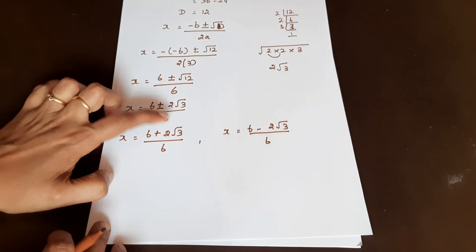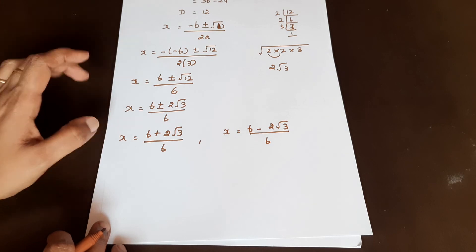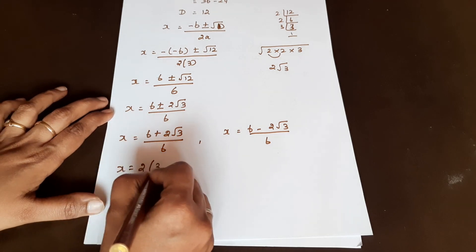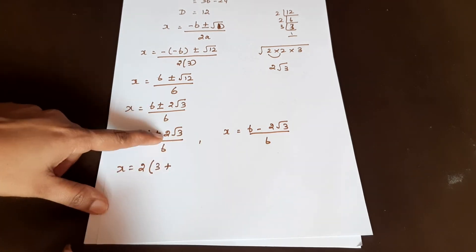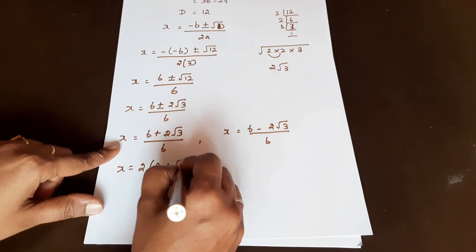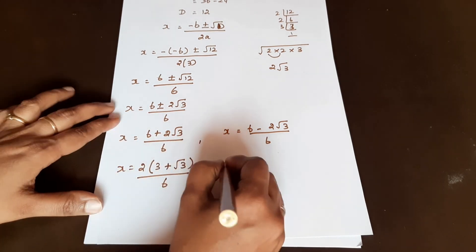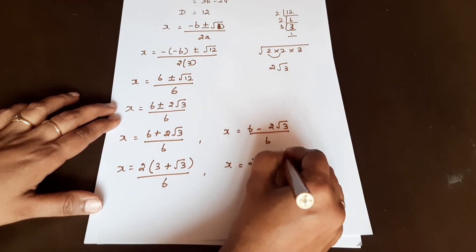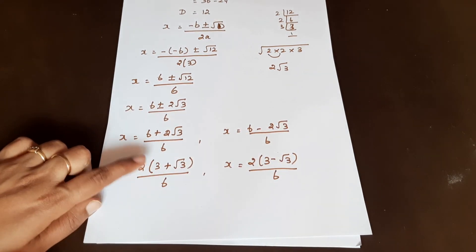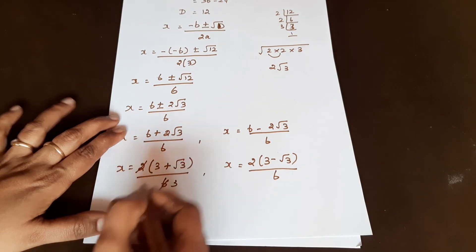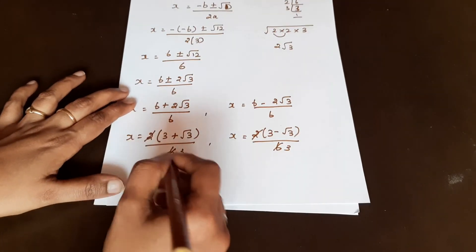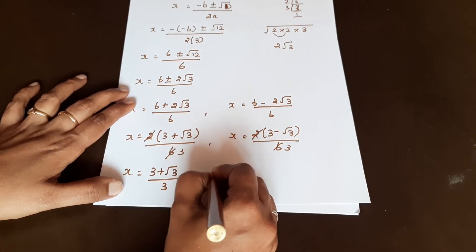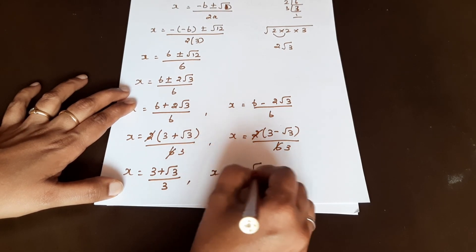In both expressions, 2 is a common factor. Taking 2 common from numerator: x equals 2 times open bracket 3 plus root 3 close bracket by 6, simplifying to 3 plus root 3 by 3. Similarly, x equals 3 minus root 3 by 3. So we have found our two roots.